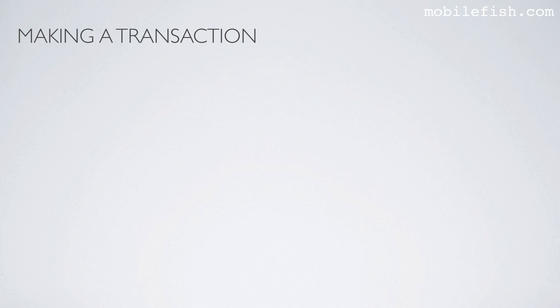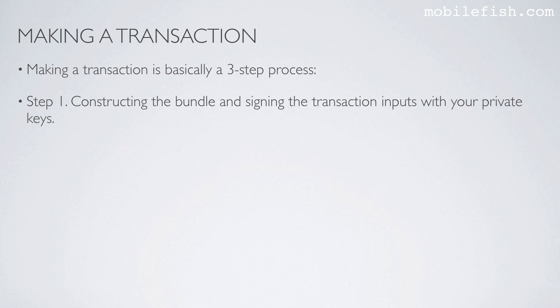To understand what is meant with curl implementation you first have to understand how IOTA transactions are made. Making a transaction is basically a three-step process. Step 1: constructing the bundle and signing the transaction inputs with your private keys.